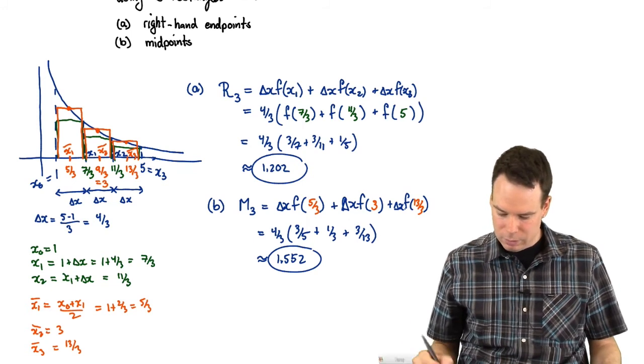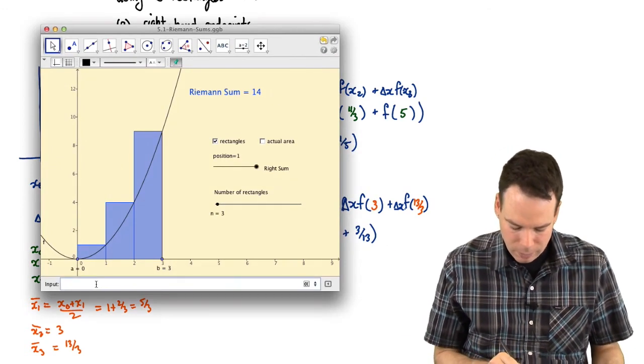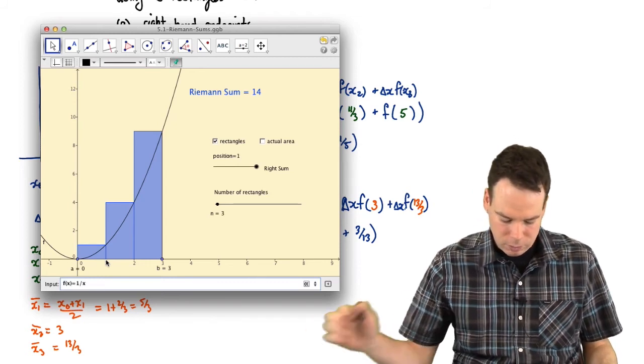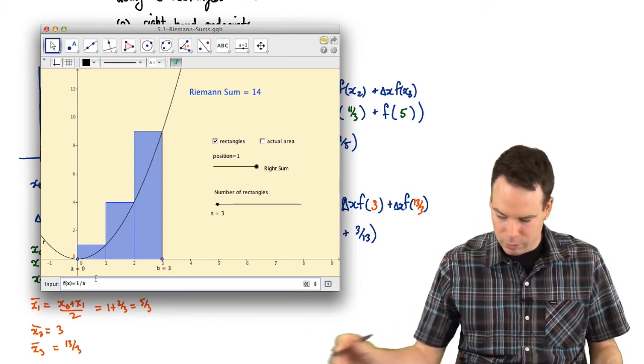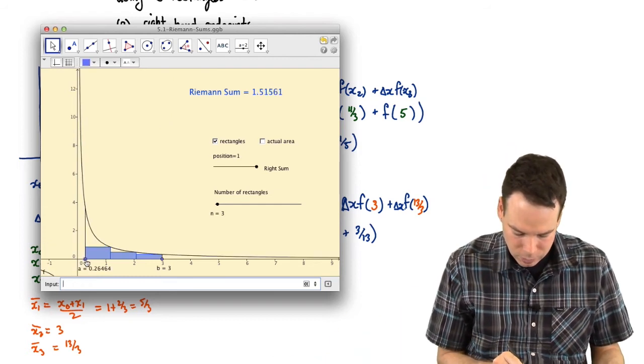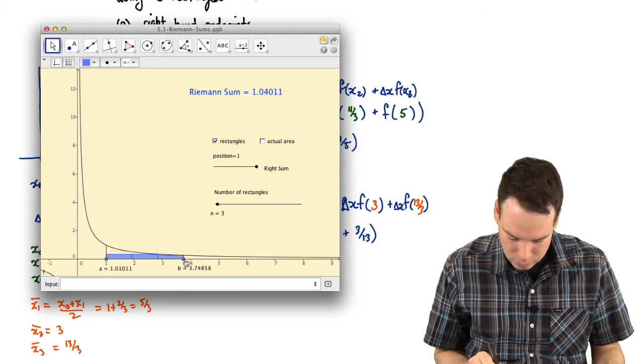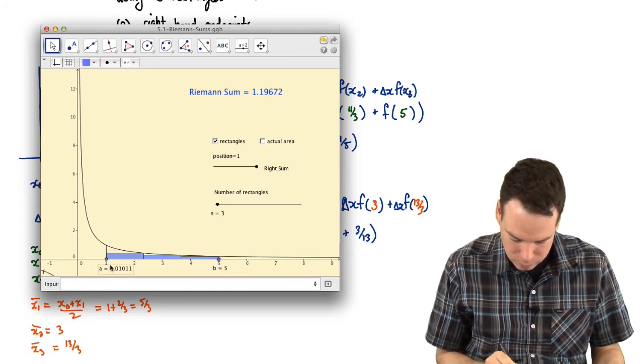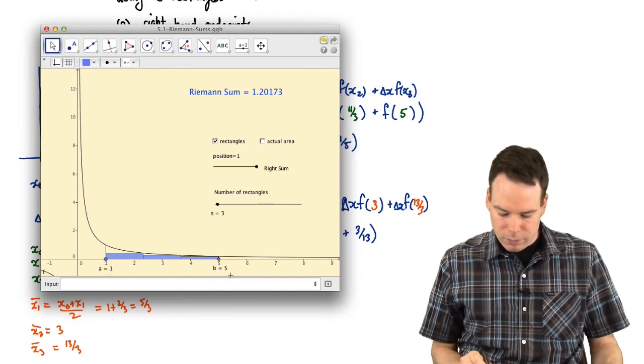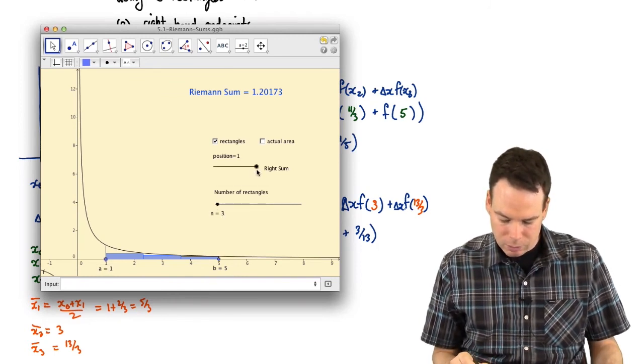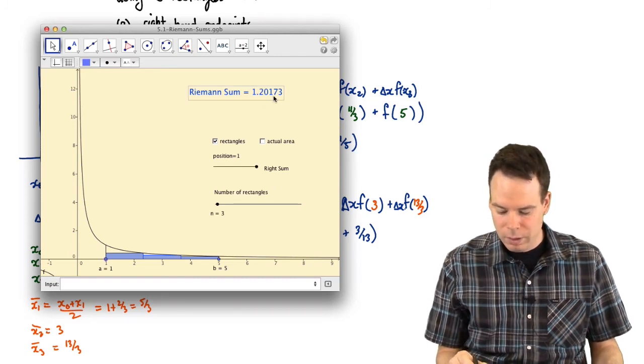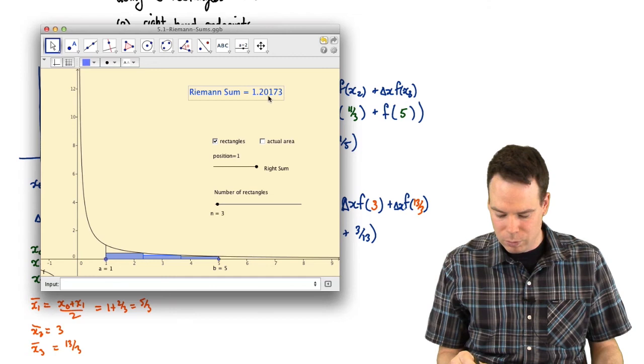We could double check this by using the applet. What we can do is change the function. The function is given by f, so we just need to write f(x) equals 1 over x. Hit enter. That changes the function. We now want to change the interval, so I can just drag on the points for the interval. Get them to match up. So that one snaps there. So we're going from 1 to 5. We have three rectangles. Right-hand endpoint. And there's our Riemann sum, 1.20. And we wrote, we rounded up to 2. But it's 1.20173.